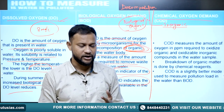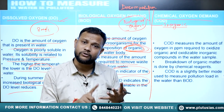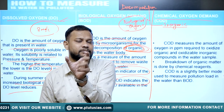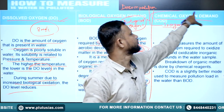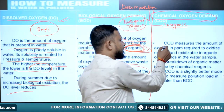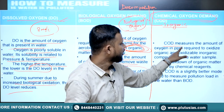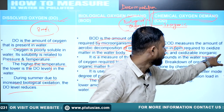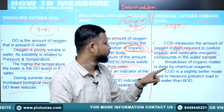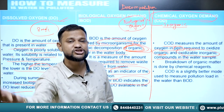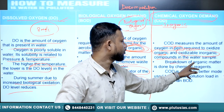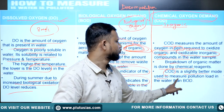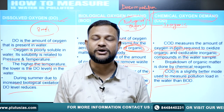Chemical oxygen demand (COD) is simply how much oxygen is required to decompose both biological and inorganic matter — organic plus inorganic matter — and this is what leads to the COD. COD measures the amount of oxygen in PPM required to oxidize organic as well as oxidizable inorganic compounds in the water sample, giving a better picture of oxygen requirement. Breakdown of organic matter is done by chemical means, and COD is a slightly better mode used to measure pollution load in water than BOD.